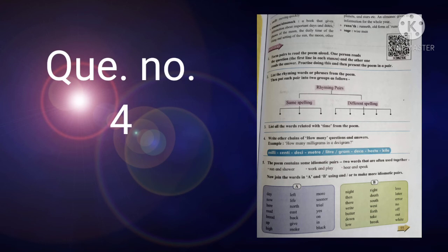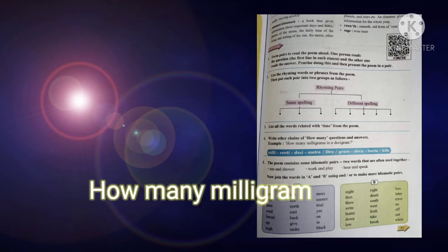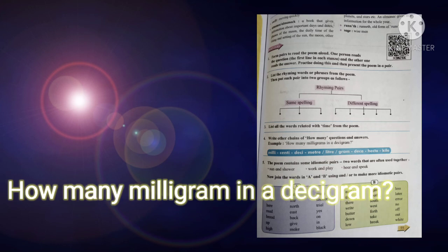Now students, question number four: write other chain of how many questions and answers. In this poem, question asks with the help of how many. Same questions we have to prepare with the help of how many. For example, given here, how many milligrams in a decigram?